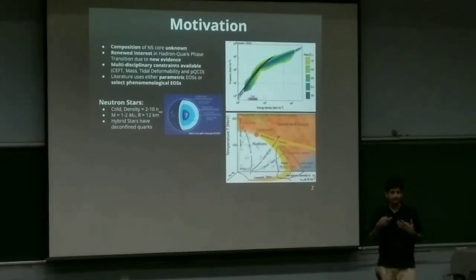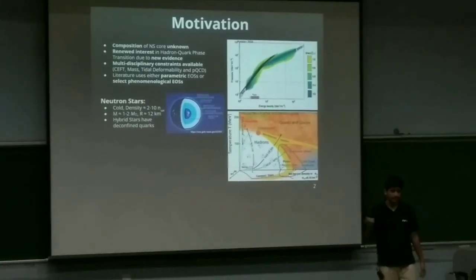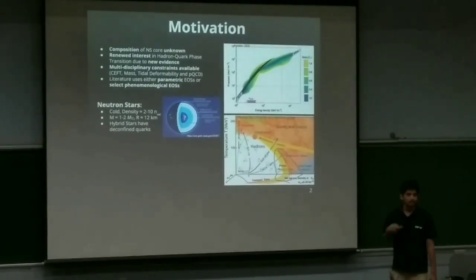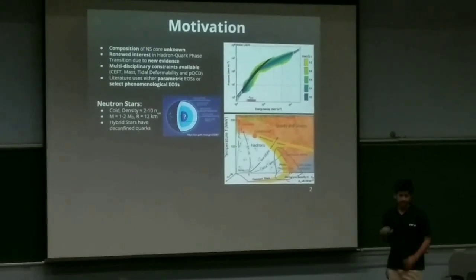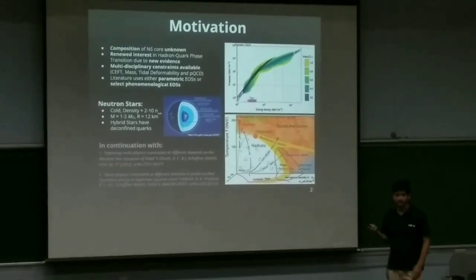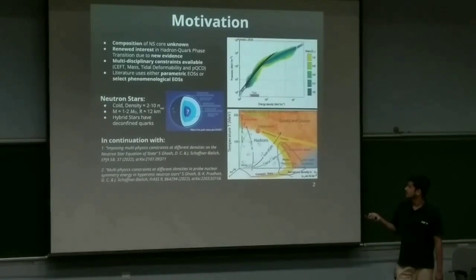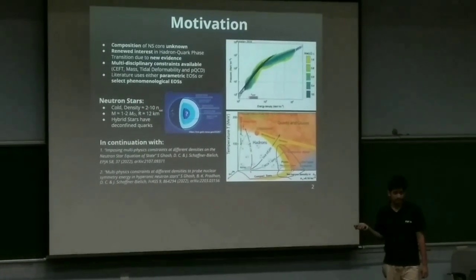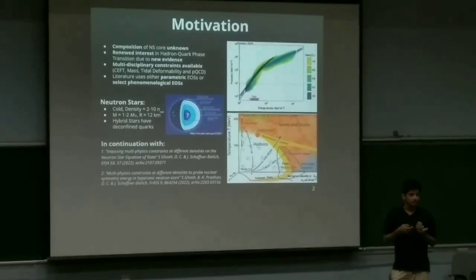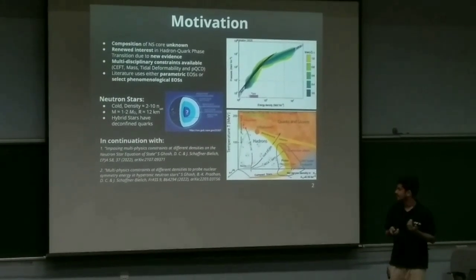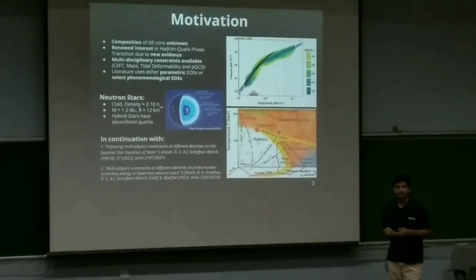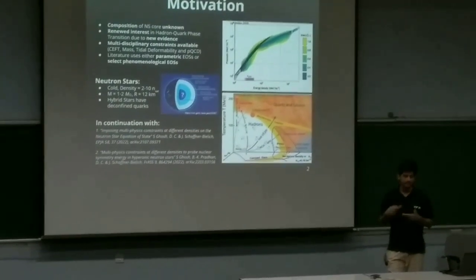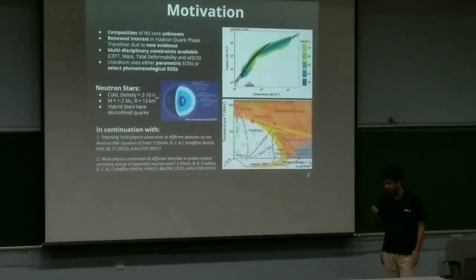And others use realistic, which has physical background, and phenomenological equations of state, but they use select equations of state. So as I'll show, we vary a lot of parameters using phenomenological equations and generate a large set of equations of state. Part of this work is in continuation with two previous works which is done. They studied correlations between different nuclear and astrophysical parameters, and also another where hyperonic degrees of freedom were added and the same study was repeated. Here we have quark degrees of freedom.